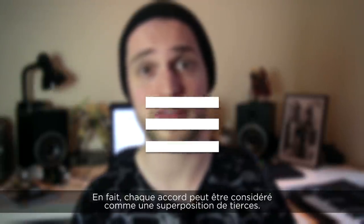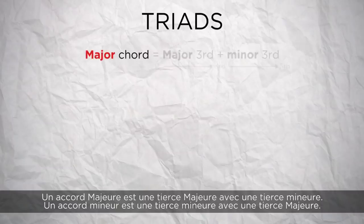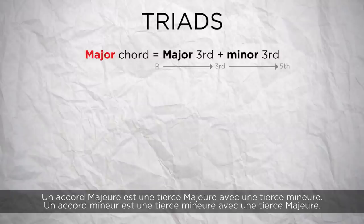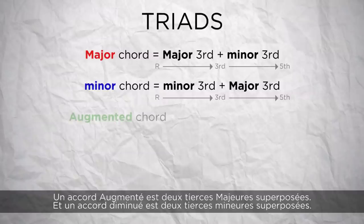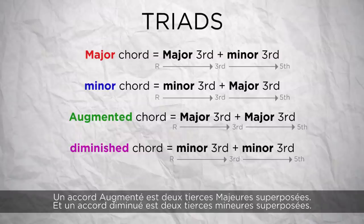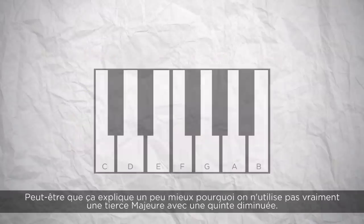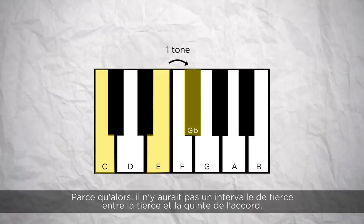Every chord can be considered as a superposition of thirds. A major chord is a major third plus a minor third; a minor chord is a minor third plus a major third; an augmented chord is two major thirds stacked up; and a diminished chord is two minor thirds stacked up. That's why we don't really use a major third with a diminished fifth — there wouldn't be an interval of a third between the third and the fifth.